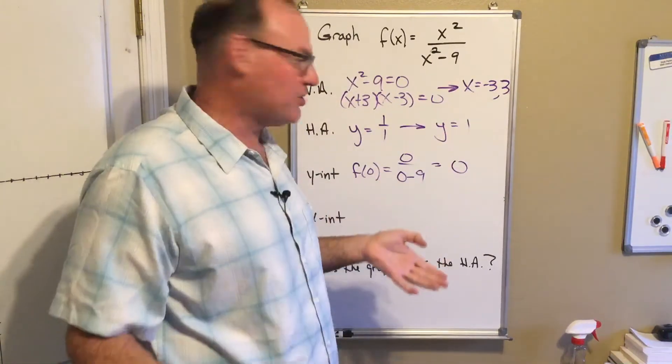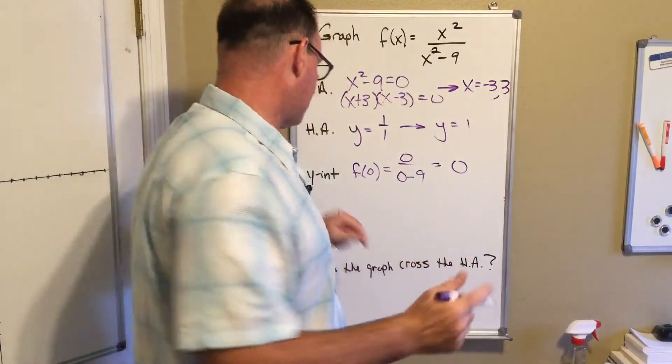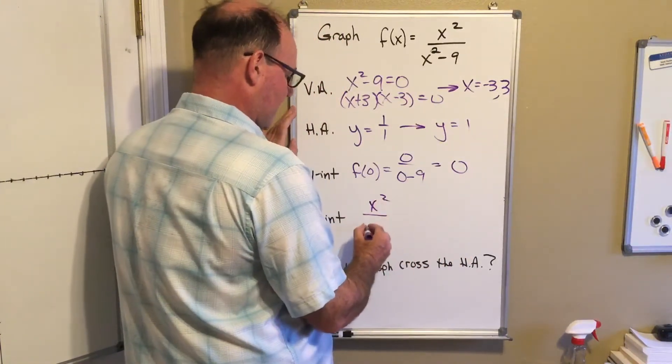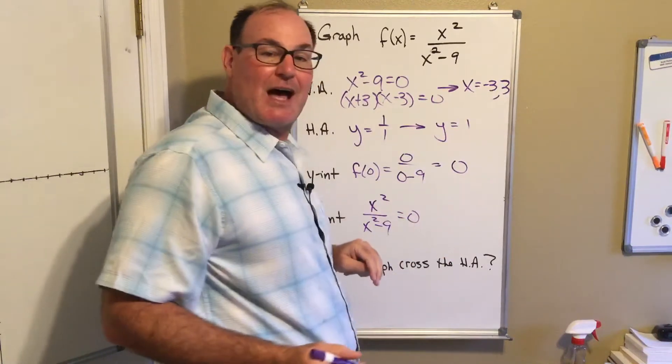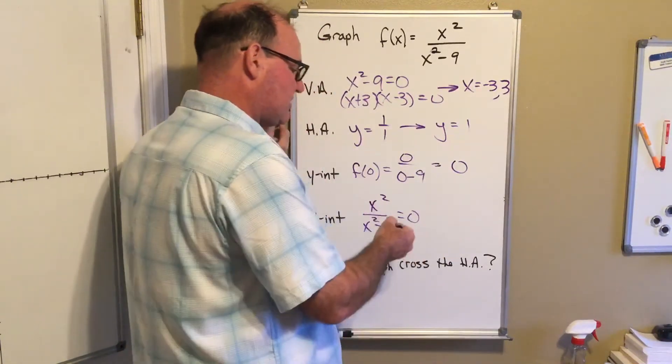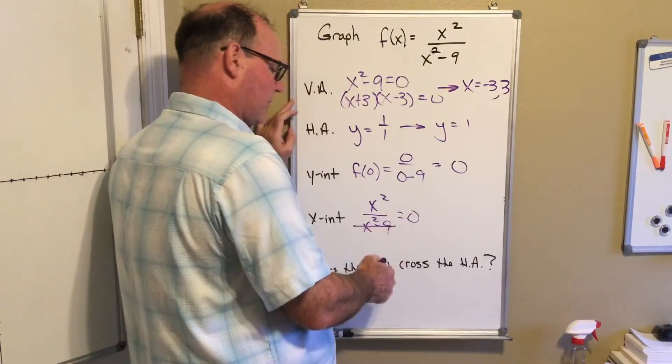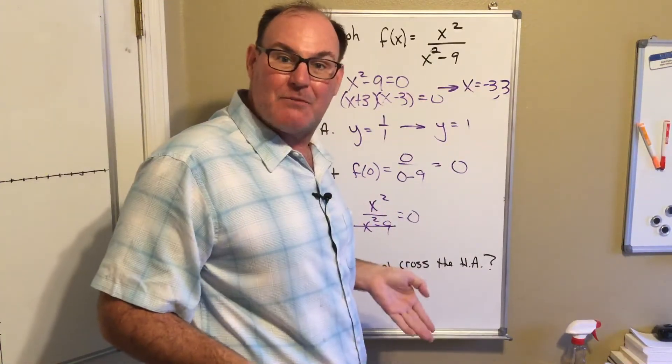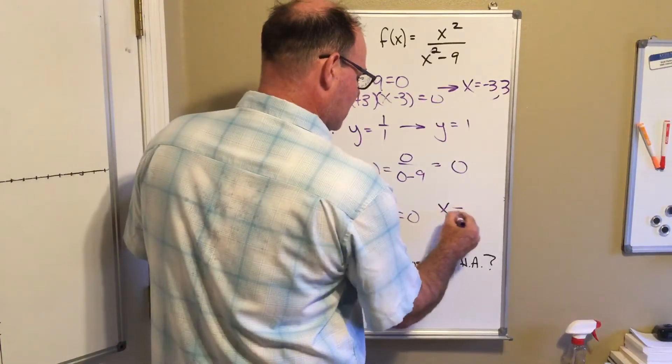The x-intercept happens when my graph equals zero. I've said a bunch of times on these videos that a fraction is only ever zero when the top is zero. So x squared equals zero.